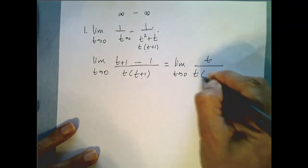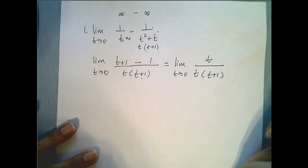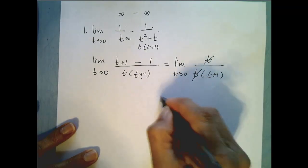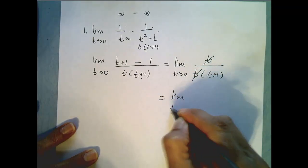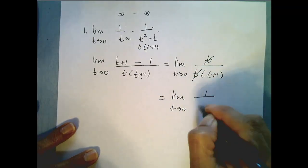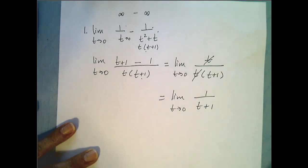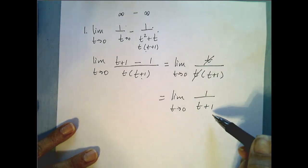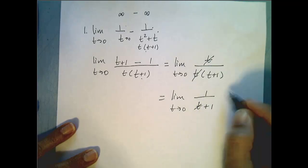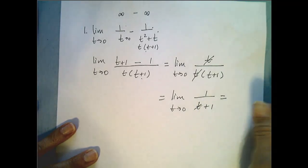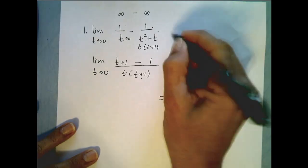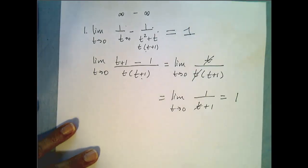And I can cancel and I know this limit is equivalent because these functions are equivalent everywhere away from 0 and now I can do direct substitution. If I plug in 0 here I get this limit goes to 1 over 1 or just 1. So our original limit is equal to 1.